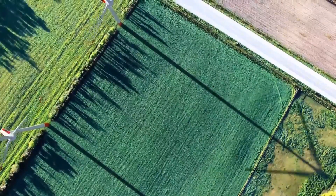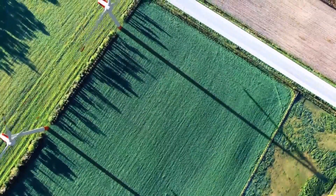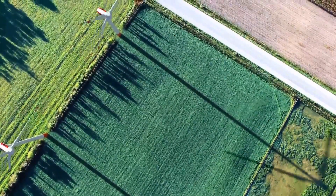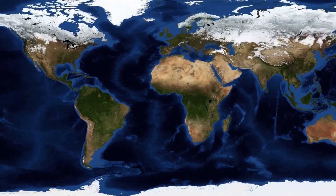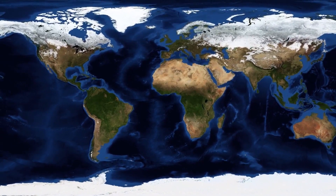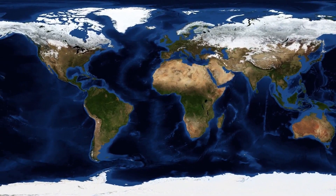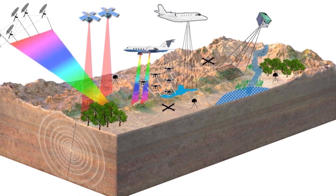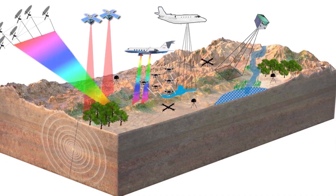Topography describes the physical features of land in a specific region. Imagine changes in elevation of landscape over a larger area. For example, mountains, hills, lakes, and valleys.